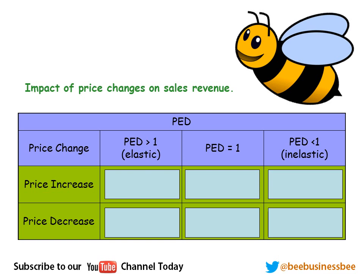Now let's think about what the impact of a change in price will have on sales revenue — a really good way to add analysis to your answer. Starting with an elastic product — answer greater than 1, more responsive. If we increase the price, sales revenue will fall. Because if it's elastic and we increase the price by 10%, we're going to lose maybe 20% of our customers, so we'll actually be worse off.